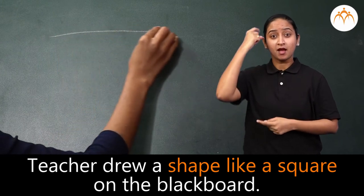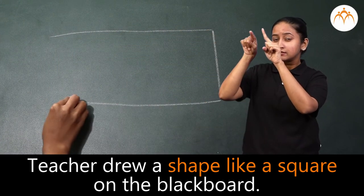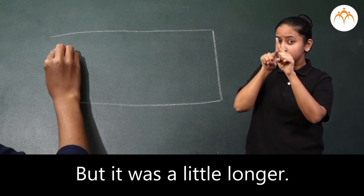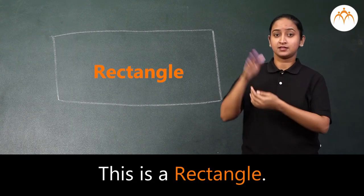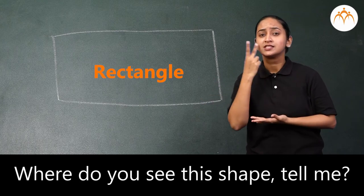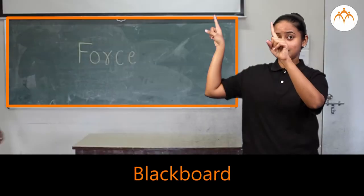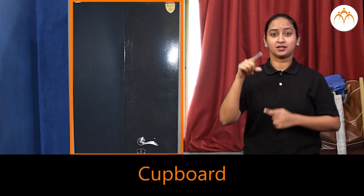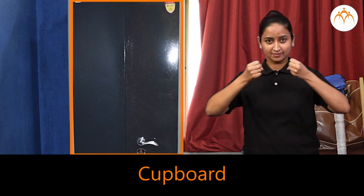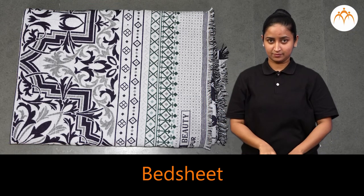Teacher drew a shape like a square on the blackboard, but it was a little longer. This is a rectangle. Where do you see this shape? Tell me. Table, blackboard, cupboard, bed sheet, door, mirror.